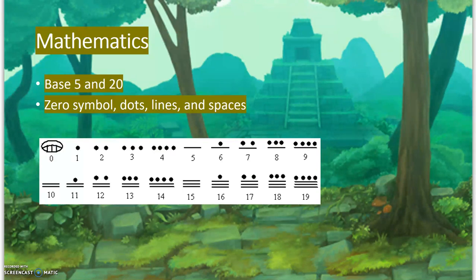Zero kind of looks like an upside down bread. Numbers 1 to 4 are represented by dots, so 4 has 4 dots. Then 5 is a line, showing the base 5. From 5 you just add dots to get to 9, and then for 10 it's just 2 fives. For 19, it's 3 fives which equals 15, plus 4 dots, which equals 19.